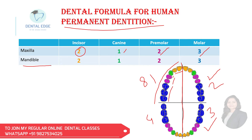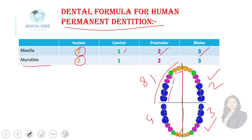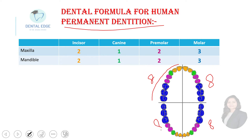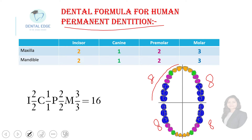In the mandible or lower arch there are also two incisors, one canine, two premolars, and three molars. These are the permanent teeth present in each arch on each side. So there are eight on the right and left of the maxilla, and eight on the right and left of the mandible.